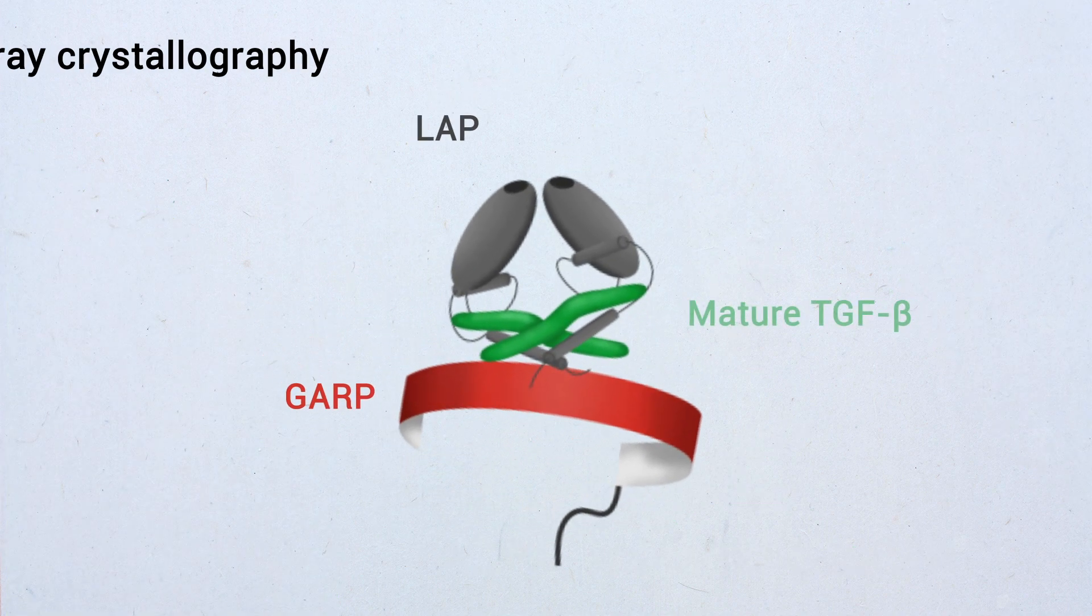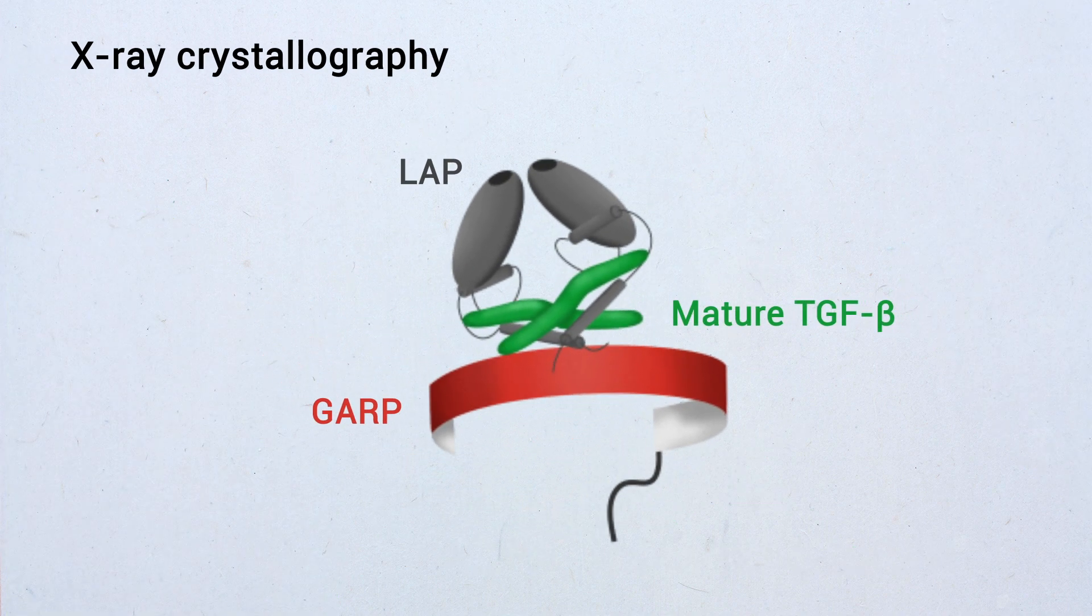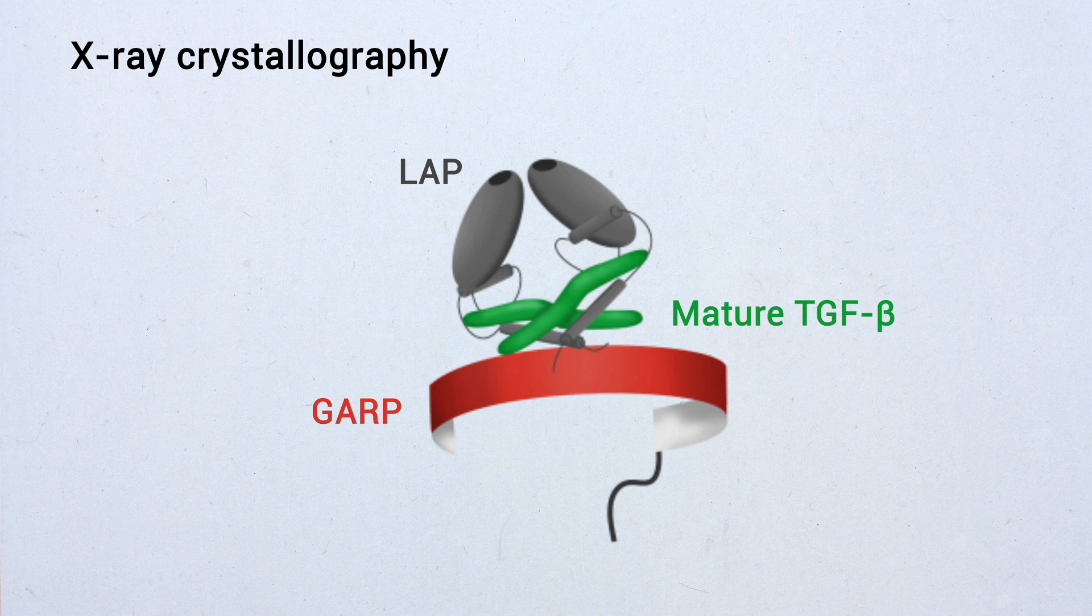In this study, using X-ray crystallography, we first attempted to resolve the three-dimensional structure of the assembly made of GARP and TGF-beta.